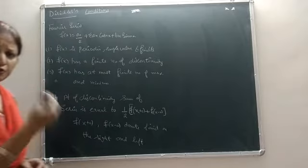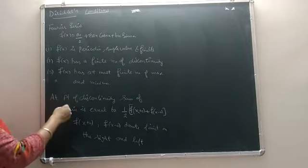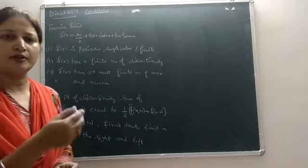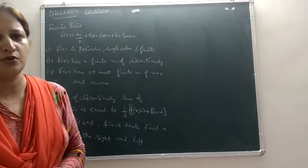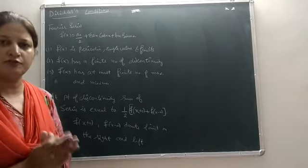According to the question, let us find the value at the point of discontinuities. The sum of this series is equal to 1/2 times [f(x+0) + f(x-0)].